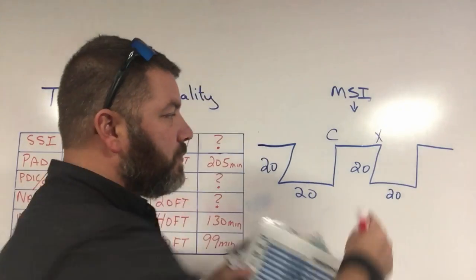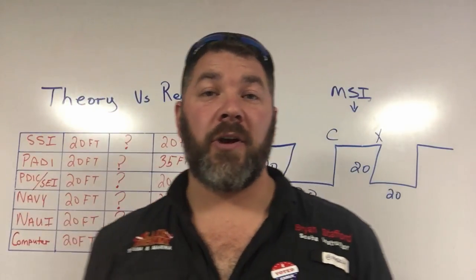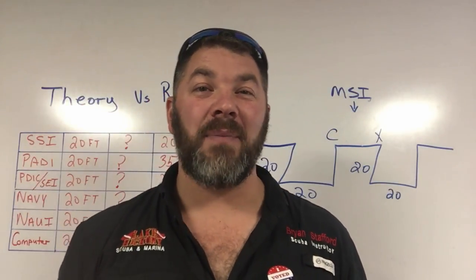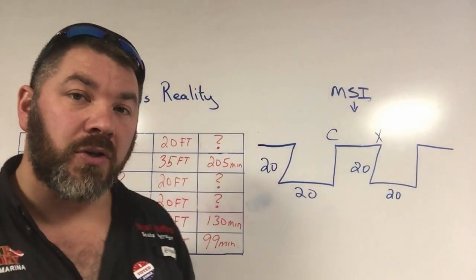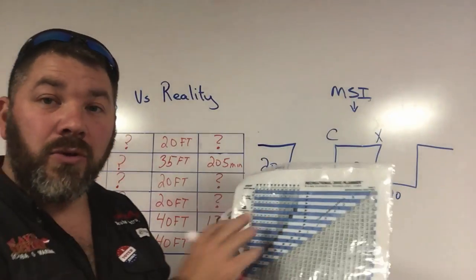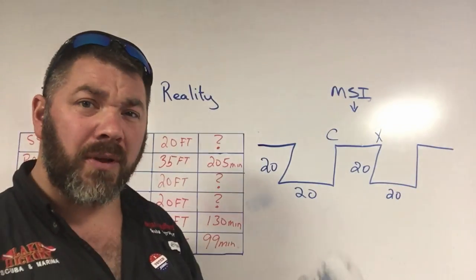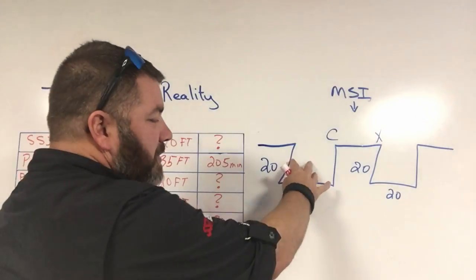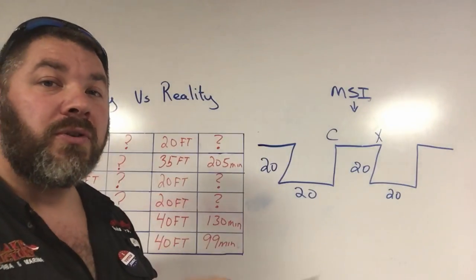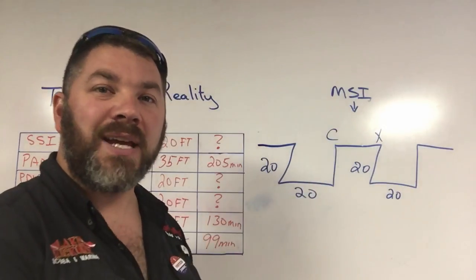I wanted to take it one step further. We're going to make a series of two dives to 20 feet for 20 minutes using his set of tables, just to be exact. For 20 feet for 20 minutes, if you don't know how to find minimum surface intervals, it's pretty easy. Your first dive uses table one, your second dive uses table three, and then we go to table two to intersect the two and find it.